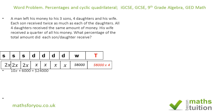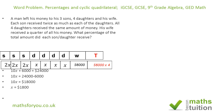If we subtract six thousand from both sides, we have 10X equal to eighteen thousand dollars. If we then divide both sides by 10, we end up with X equal to one thousand eight hundred dollars.